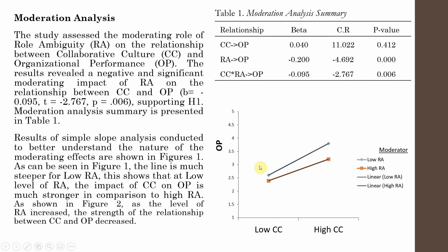Here is your simple slope analysis, or a graph to model your moderation analysis. Results of the simple slope analysis conducted to better understand the nature of the moderating effects are shown in Figure 1. Look at the blue line — it is much steeper — and look at the red line, which shows high role ambiguity, while the blue line shows low role ambiguity.